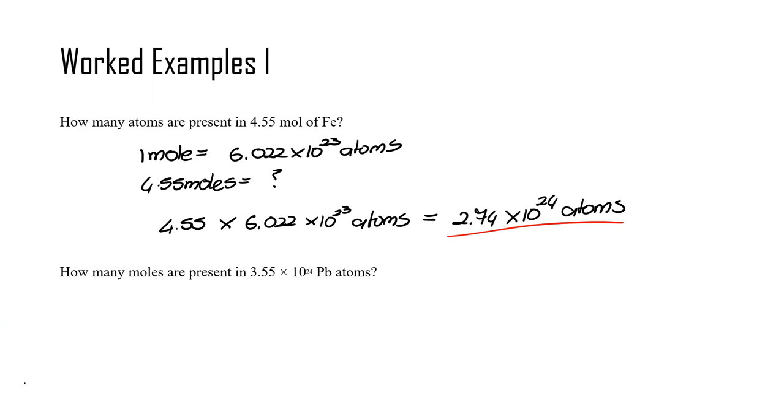We can do this the other way around. So how many moles are present in 3.55 times 10 to 24 lead atoms? And we'll do it the same way. 1 mole is equal to 6.022 times 10 to the 23 atoms.